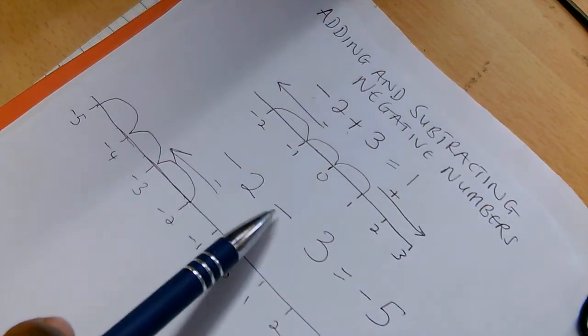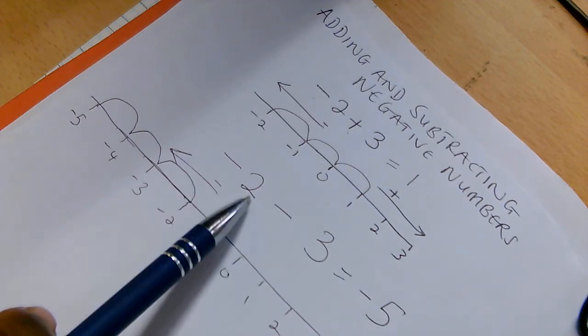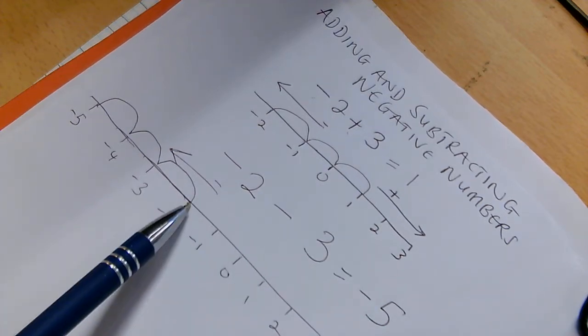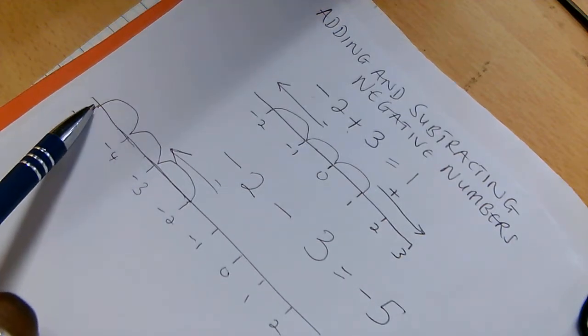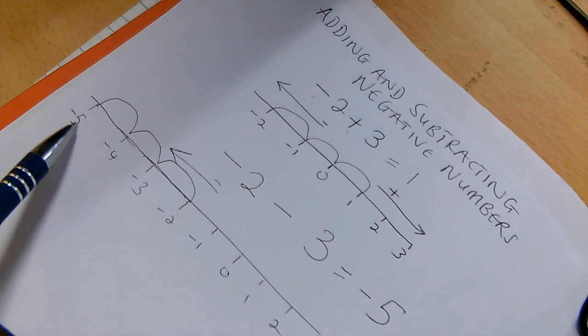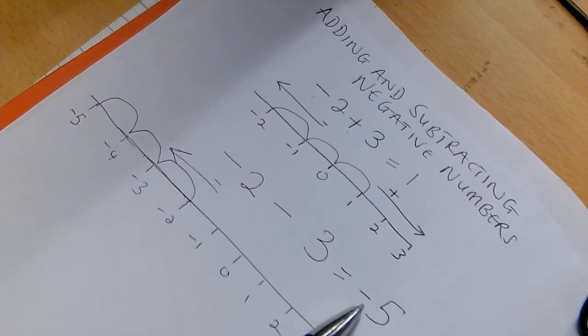However, if you're taking away, you have negative 2 minus 3, for example. You go from negative 2 this way, and 3, you've taken away 3, you landed on negative 5. Your answer is minus 5.